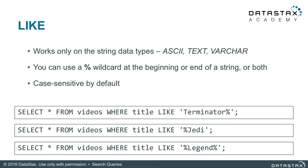LIKE is very useful. It adds the ability to search via simple regular expressions in CQL. It works only on string data types: ASCII, text, and varchar. You can use a percentage sign as the wildcard at the beginning, end of a string, or even both. It is case sensitive by default, but can ultimately change based on your schema.